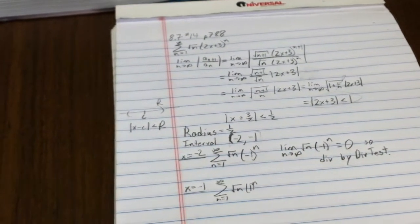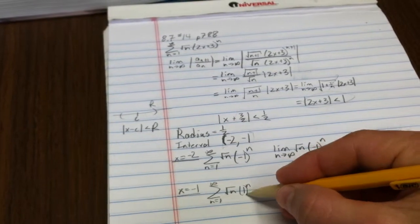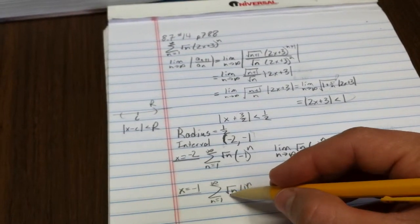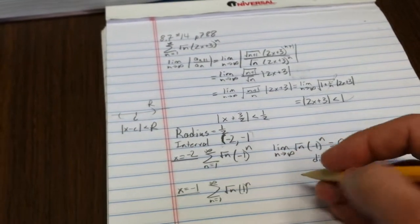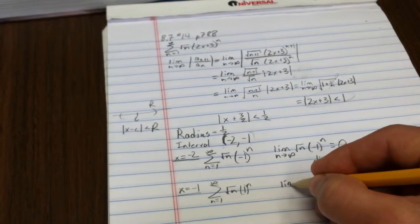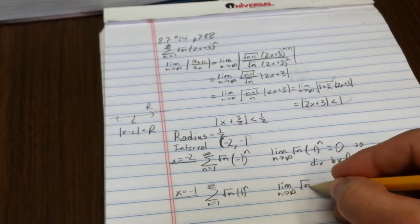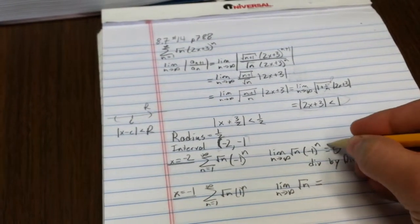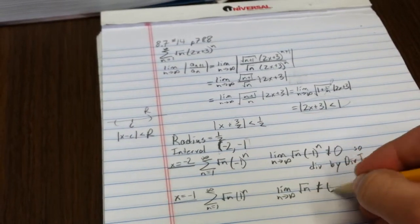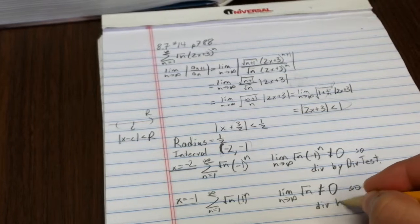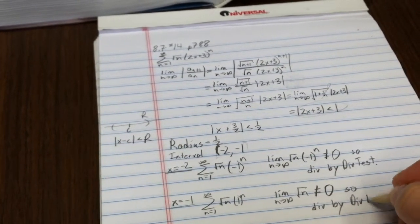1 to the n, that's just about the same as 1, right? So, this is really just the sum, n equals 1 to infinity of the square root of n. Again, those terms don't go to 0. So, that fails the divergence test. This is not equal to 0. So, divergence by the divergence test.